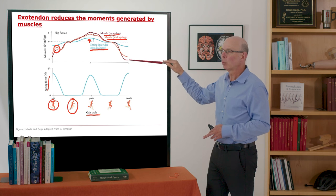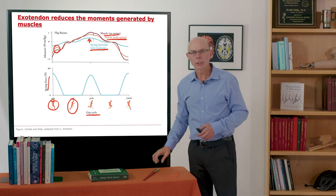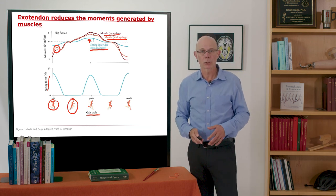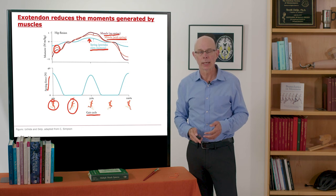You see the same thing here. Here's without exotendon, with exotendon, and the moment you're getting from the exotendon. So you see it's saving force generating requirement in the muscle and that's resulting in increased energetic savings.